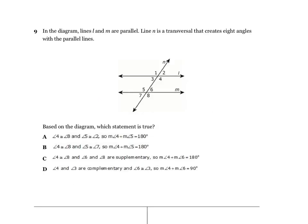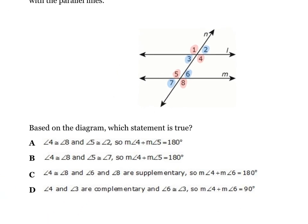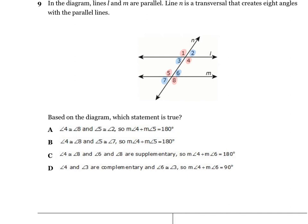On number 9, lines L and M are parallel, and line N is a transversal creating eight angles. Based on the diagram, which statement is true? I like to highlight which angles are going to be the same: angles 2 and 3 are vertical angles — same thing. Angles 6 and 7 are the same. Angles 1 and 4 are the same, and angles 5 and 8 are the same. Looking at answer choice A, it says angles 4 and 8 are equal — both are the same color, that looks good. But it also says angle 5 equals angle 2, and those are two different colors, so A is out.